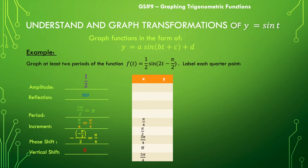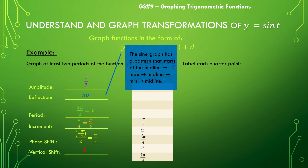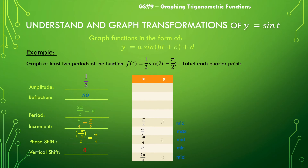Now remembering our pattern — mid to max to mid to min to mid — let's put our midline values in, which will be whatever our vertical shift is, so that will be zero. Then we will use our amplitude: we'll add it to the midline and subtract it from the midline to get our maximum and our minimum, so we'll have positive one-half and negative one-half.